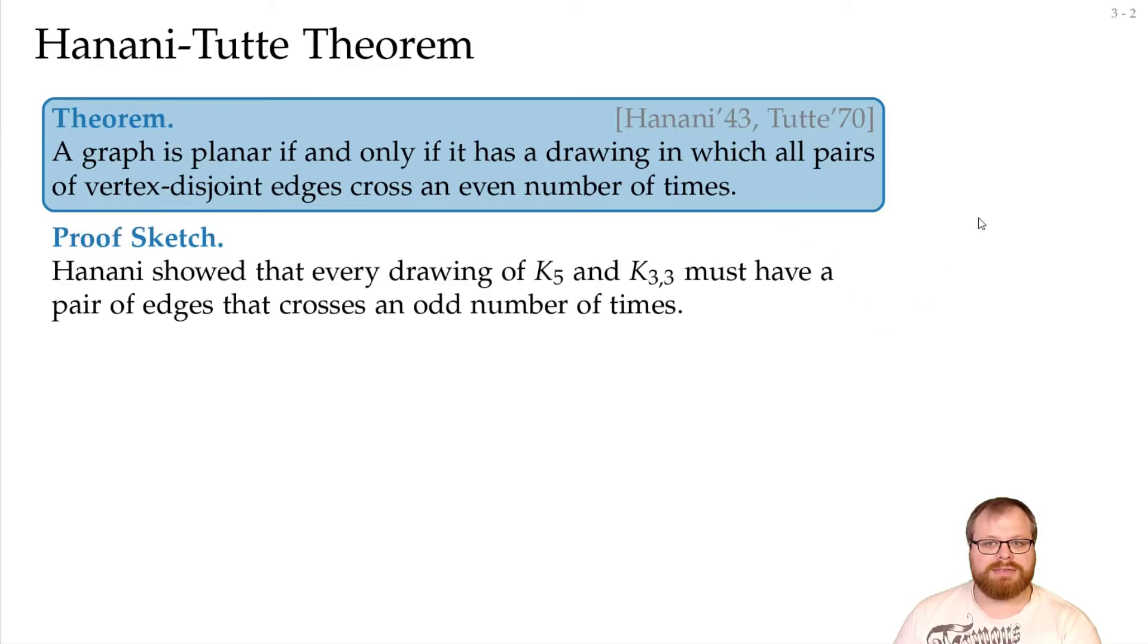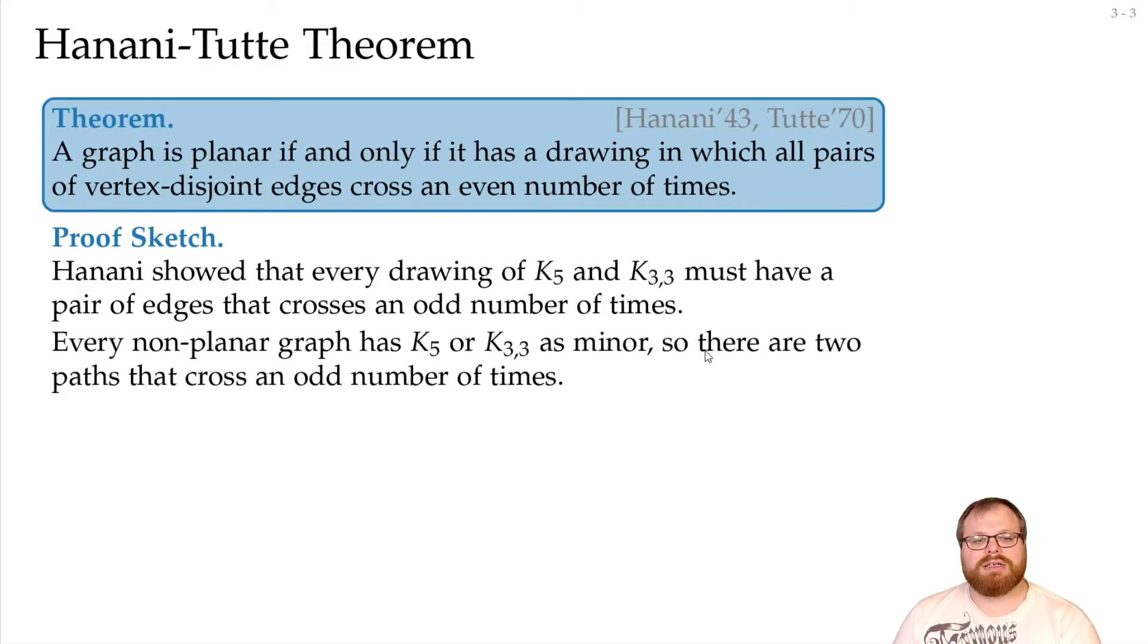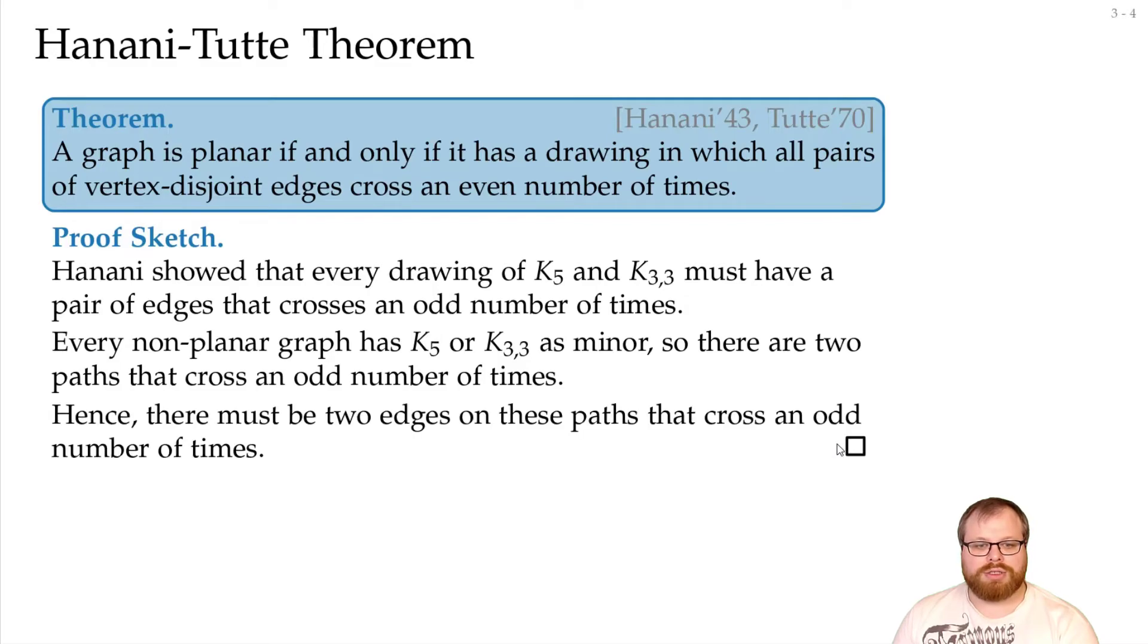But the way Hanani did it was slightly different. He showed that every drawing of the K5 and every drawing of the K33 must have a pair of edges that crosses an odd number of times. And every non-planar graph, that one we know, has K5 or K33 as a minor. So that means that there are two independent paths that correspond to the edges that cross here, and there is an odd number of crossings between these paths.